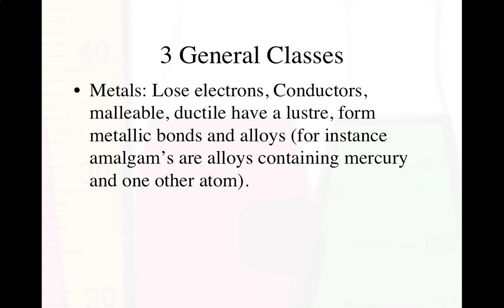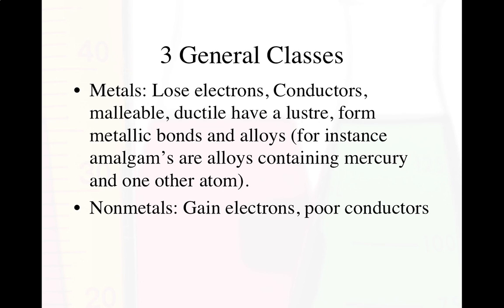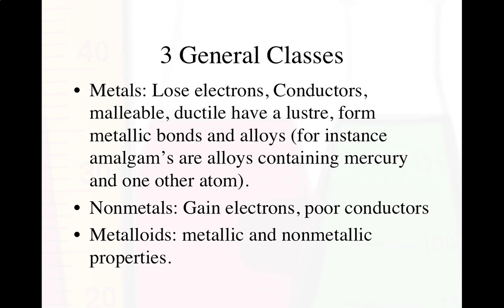There are three general classes of elements. Metals lose electrons; they're conductors, malleable — meaning we can bend them — and ductile, meaning we can pull them into a wire. They have luster, form metallic bonds, and can form alloys, which is multiple metals forming one grouping together. For instance, amalgams are alloys containing mercury. We also have bronze and brass. Nonmetals gain electrons and are poor conductors. And then we have metalloids, which have both metallic and non-metallic properties.